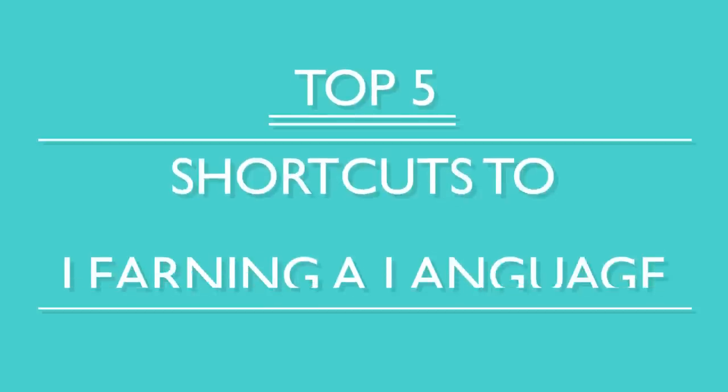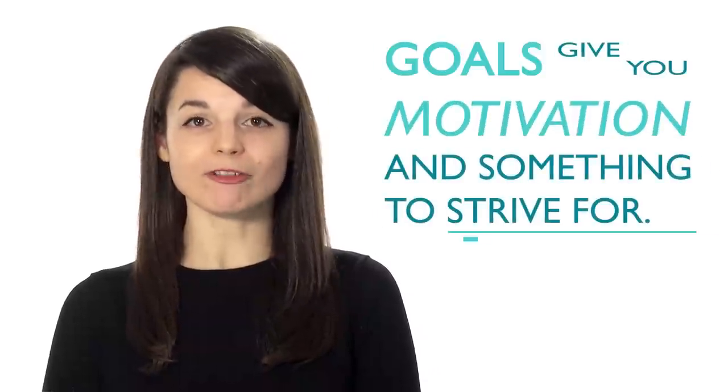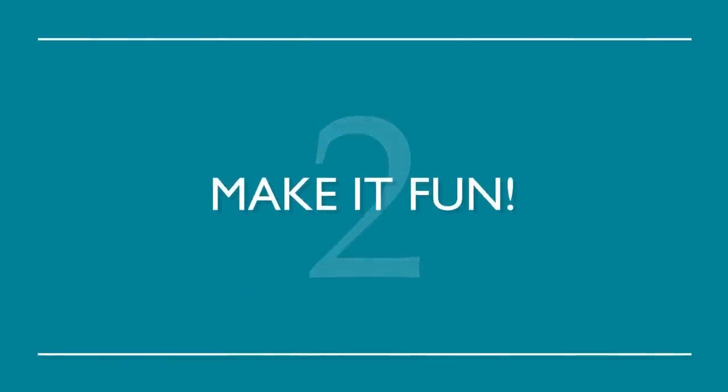You've decided to study a new language — so now what? You want to become fluent fast, right? Here are the top five shortcuts to learning a language. Number one: create a study schedule and set some goals. Many language learners are unorganized — creating a schedule allows you to free up time to study consistently, and goals give you motivation and something to strive for. Number two: make it fun. If you learn how to make your study time enjoyable, chances are you'll be more inclined to study. Watch a TV show with subtitles or listen to some music.